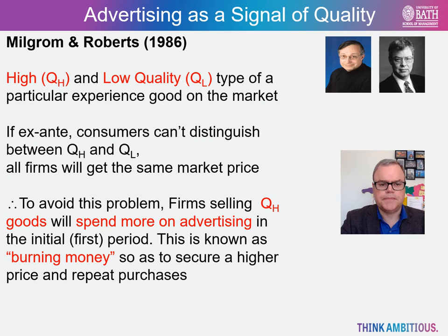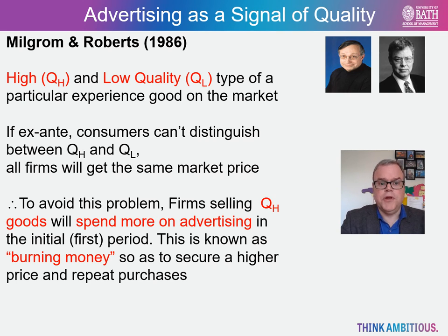Their argument goes something like this. Consider a firm introducing a new breakfast cereal. A typical advertisement might have some highly paid actor eating the cereal and exclaiming how wonderful it tastes. But how much information does the advertisement actually provide? The answer is more than you might think. Because even though the advert appears to contain little hard information, it may in fact tell consumers something about product quality. The willingness of the firm to spend a large amount of money in advertising can itself be a signalling mechanism to consumers about the quality of the product being offered. Pre-purchase, consumers cannot tell the difference between a high quality and low quality cereal. This is a problem for high quality producers such as Kellogg's, since they will not be able to attain a high enough price. Thus, to make their presence felt, Kellogg's advertises extensively, because they know that once consumers buy their cereal, they'll purchase it again and again. This is known as burning money on advertising, so as to secure repeat purchases in the long run.